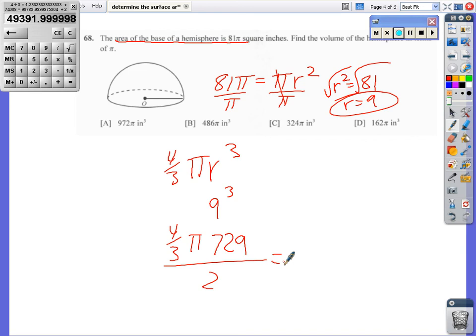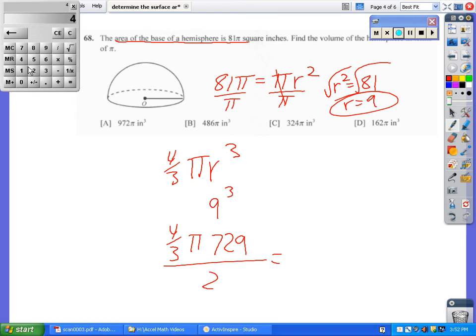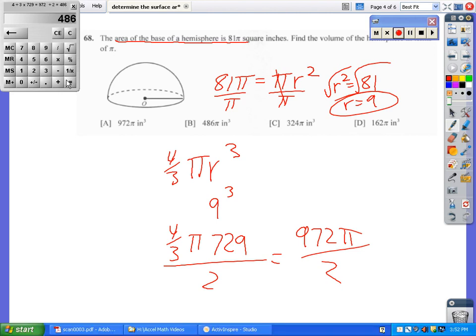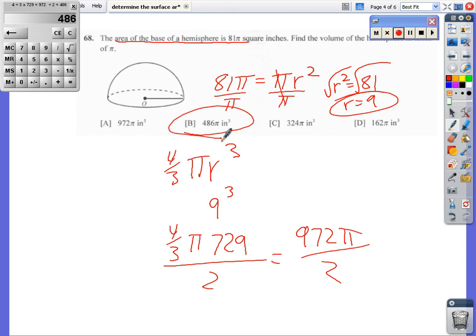So let me clear all this. 4 divided by 3 times, there's that familiar 1.333, 729. 972. That's 972 pi, but I've got to divide it by 2. 486 pi inches cubed. All right.